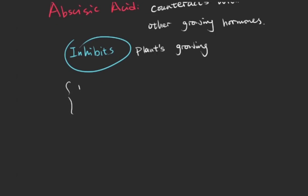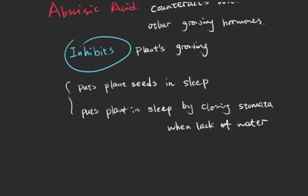Abscisic acid counteracts with other growing hormones by inhibiting the plant's growing process. So abscisic acid is like a sleeping pill for plants. It can put plant seeds in sleep and can also put a plant in sleep by closing stomata when there's lack of water in the environment.